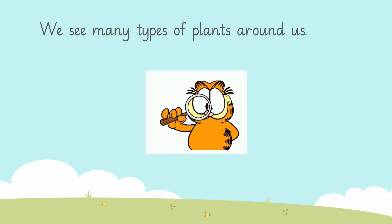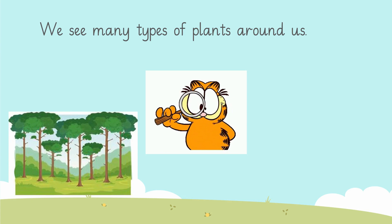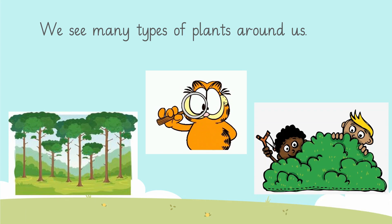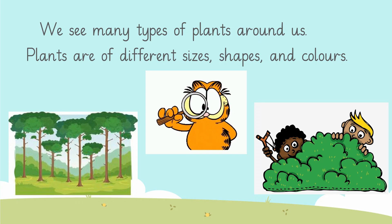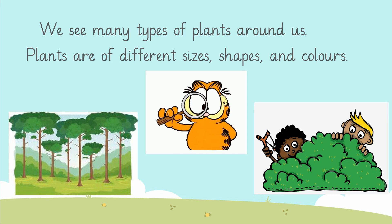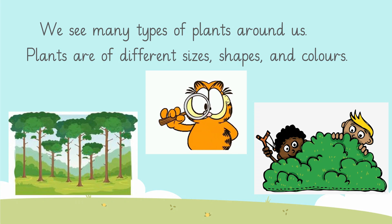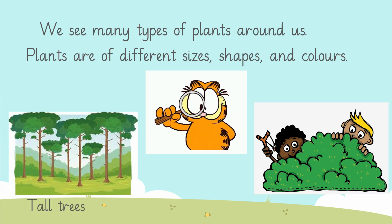Have you ever been to a garden or a park? Have you observed that all the plants there — are they all the same? They are the same in some ways, yet they look different as well. They are different in sizes, shapes, and colors. Some have fruits and flowers, some do not. Even the color, shape, and sizes of their leaves are different. Some have sweet fruits and some have sour fruits.